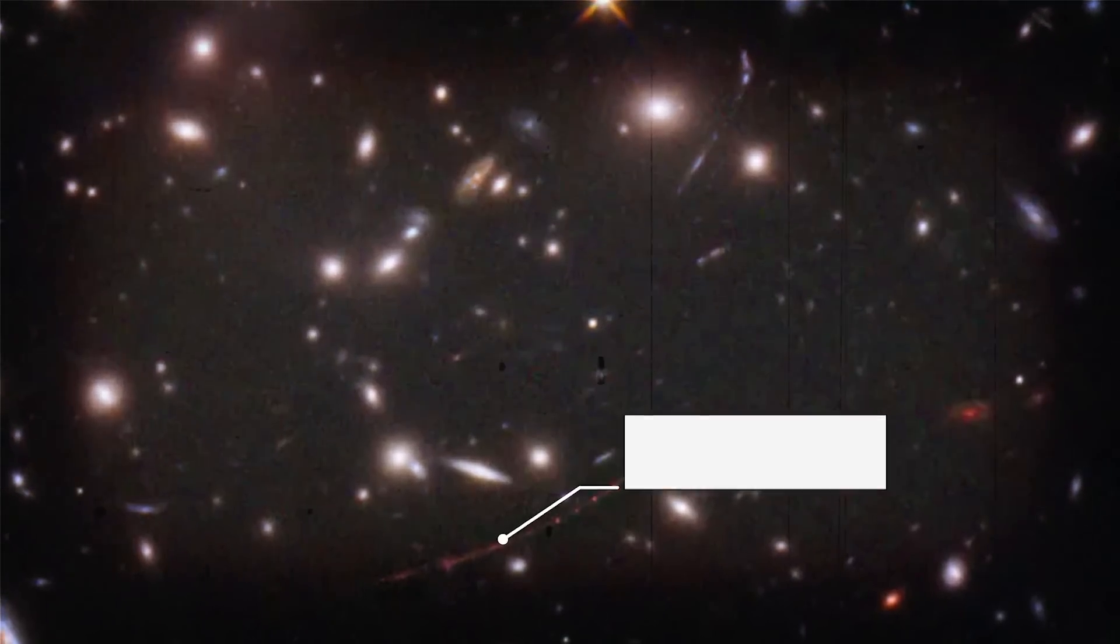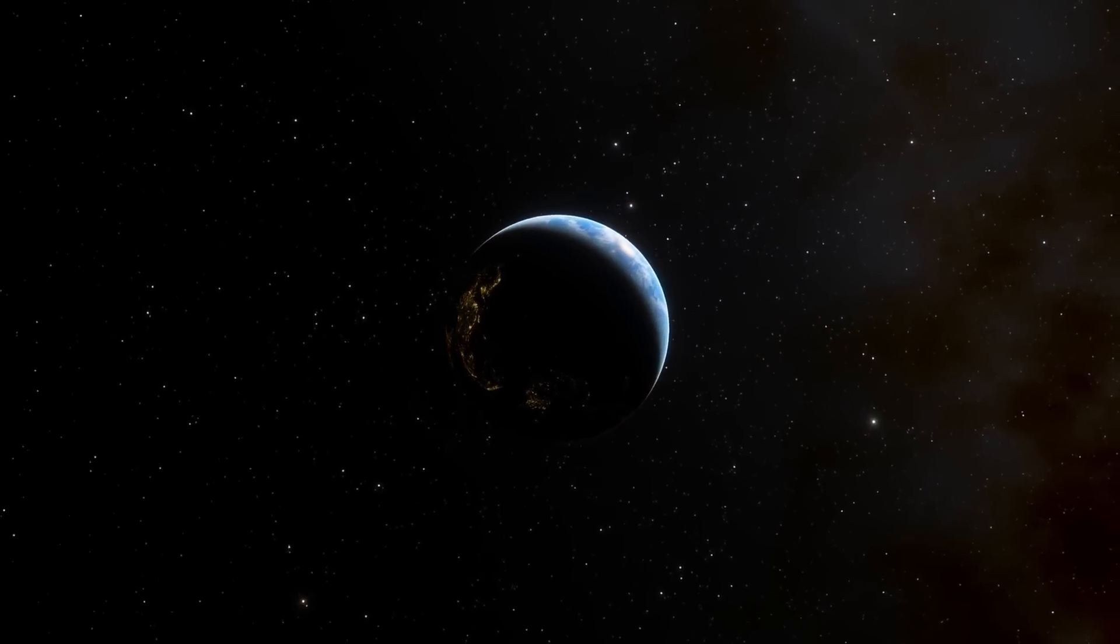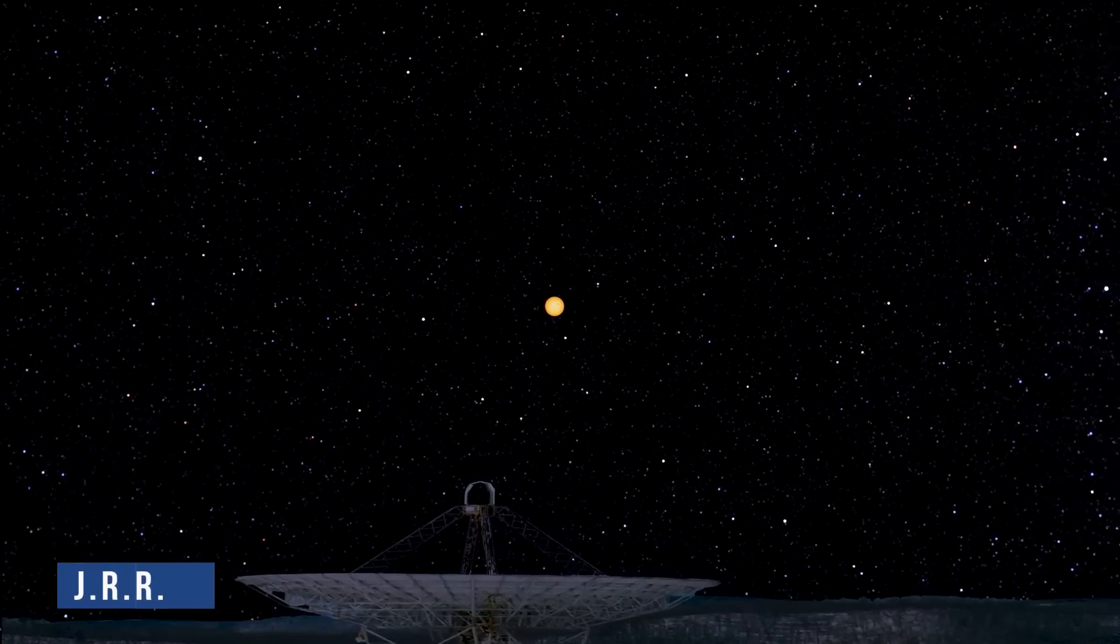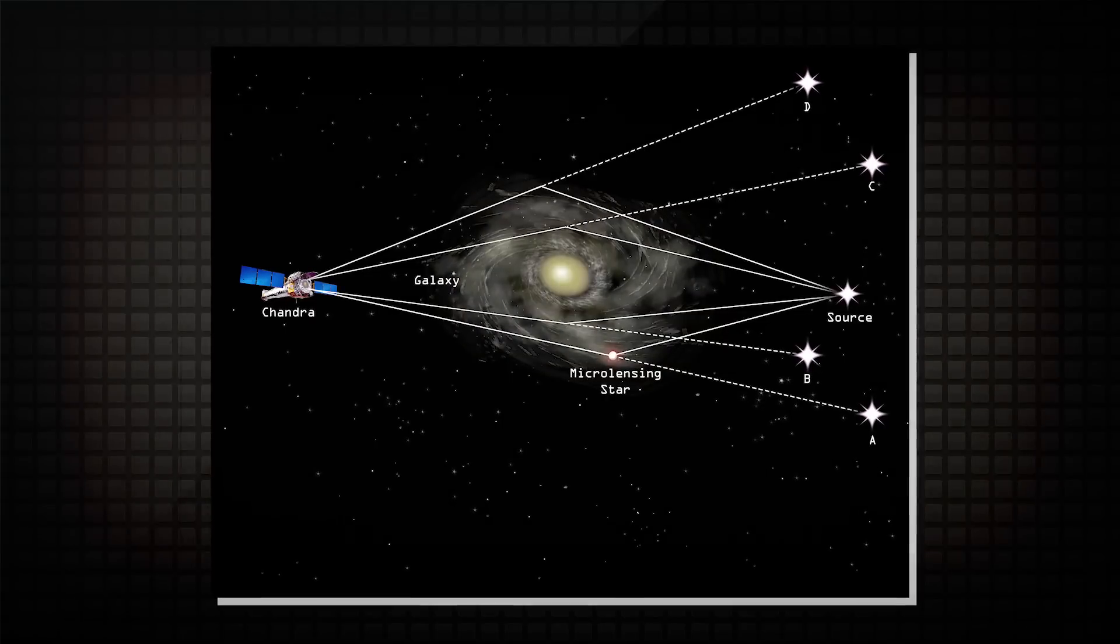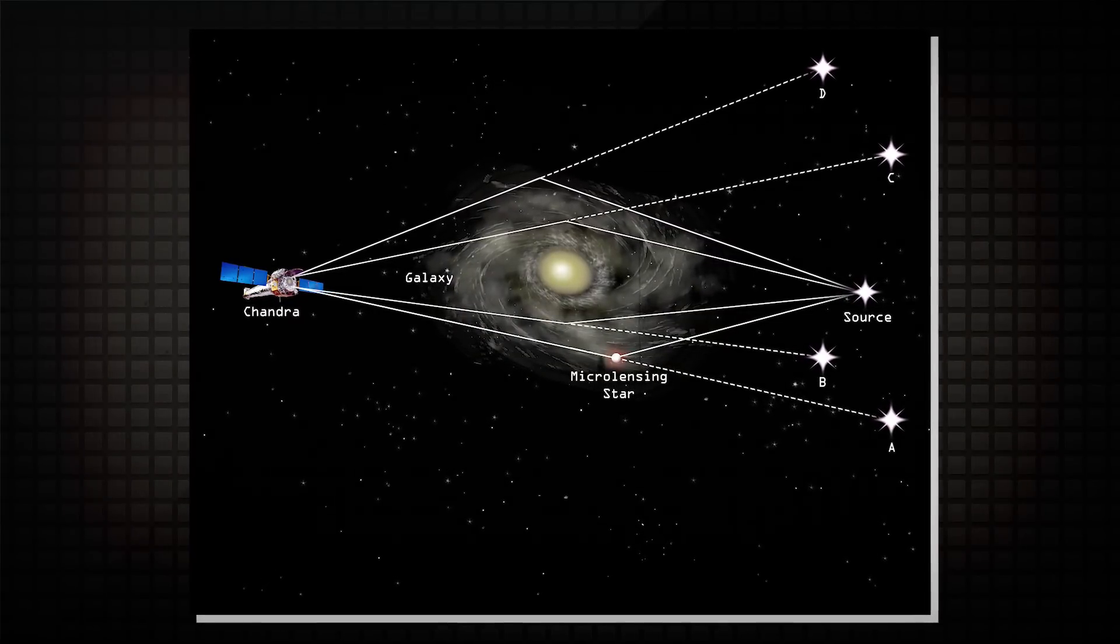The star, which has been given the name Earendel after a character from the Lord of the Rings prequel, The Silmarillion by J.R.R. Tolkien, was discovered in a deep-field photograph from the Hubble Space Telescope because of gravitational lensing.